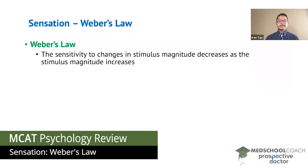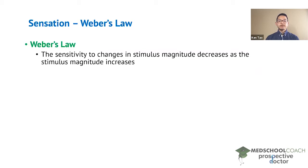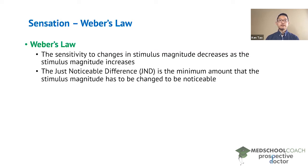In this video we're going to go over Weber's law. Weber's law states that the sensitivity to changes in stimulus magnitude decreases as the stimulus magnitude increases. A term that's very important for this is what is called the just noticeable difference, or JND. This is the minimum amount that the stimulus magnitude has to be changed to be noticeable.